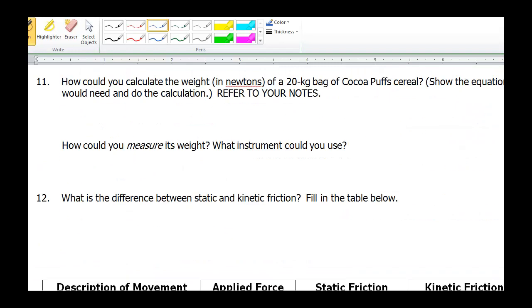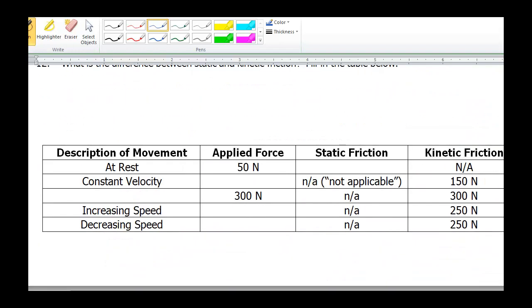If you look on the back side, you're going to see a different type of table. Let me explain how this works. Description of motion. If the object is at rest, and you are applying a force of 50 newtons to it, then how much static friction must there be? We know we're dealing with static friction because it is at rest. And because it's at rest, the forces on it are balanced. Applied force of 50 newtons must be balanced with a friction force of 50 newtons.